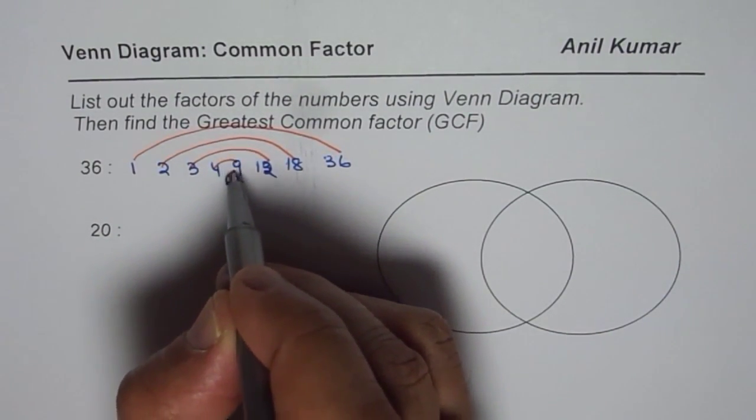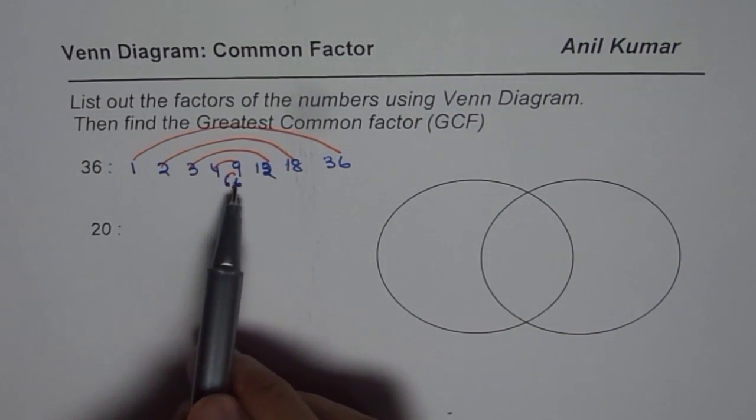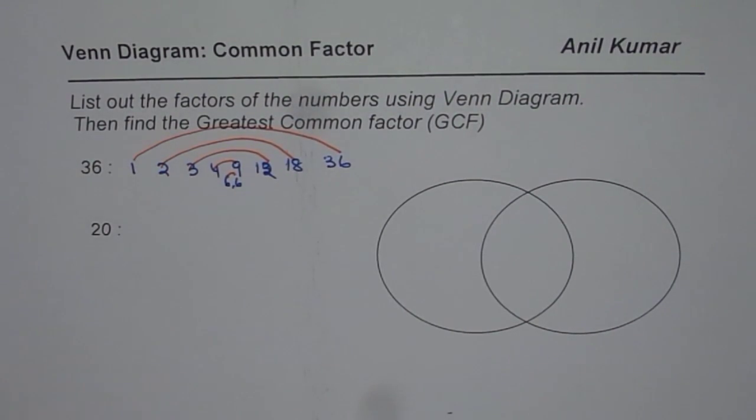4 times 9 and 6 times 6. So we have got 1, 2, 3, 4, 5, 6, 7, 8, 9 factors.